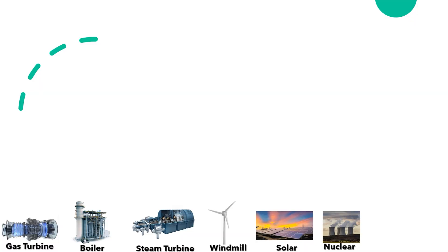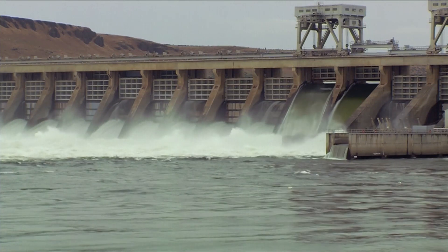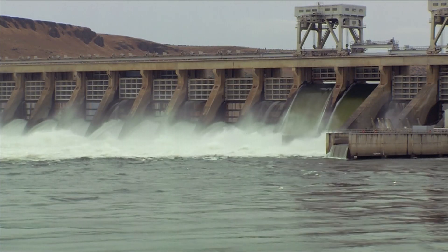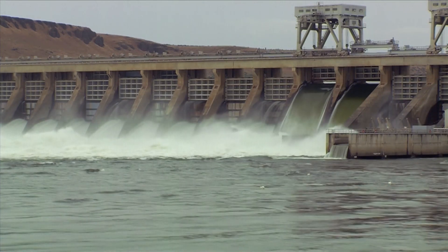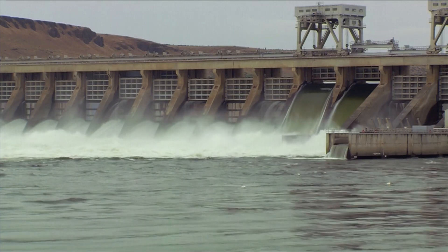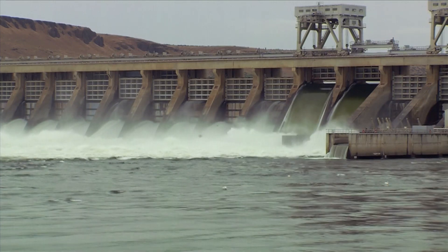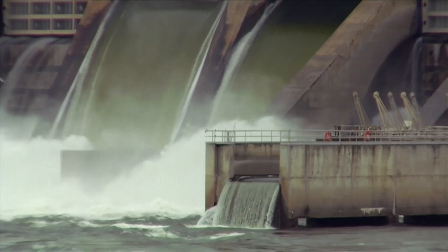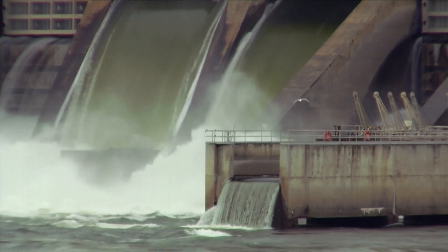A hydropower plant — an impoundment facility, typically a large hydropower system — uses a dam to store river water in a reservoir. Water released from the reservoir flows through a turbine, spinning it, which in turn activates a generator to produce electricity.